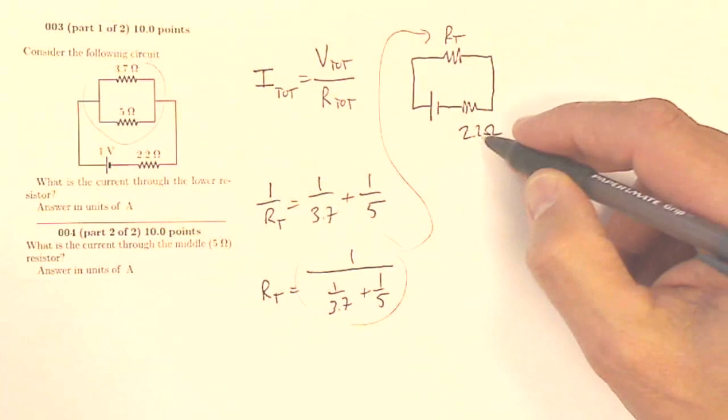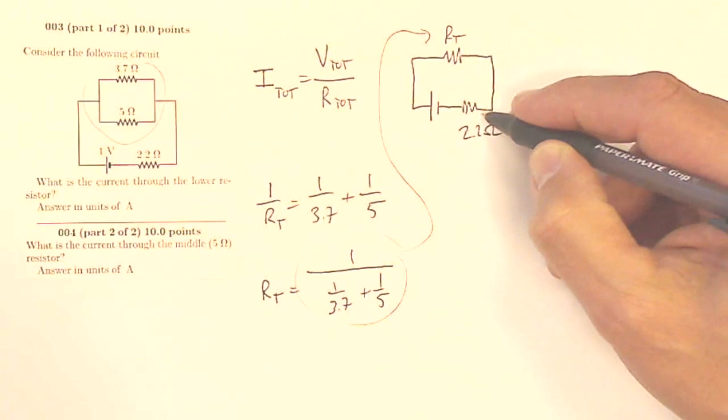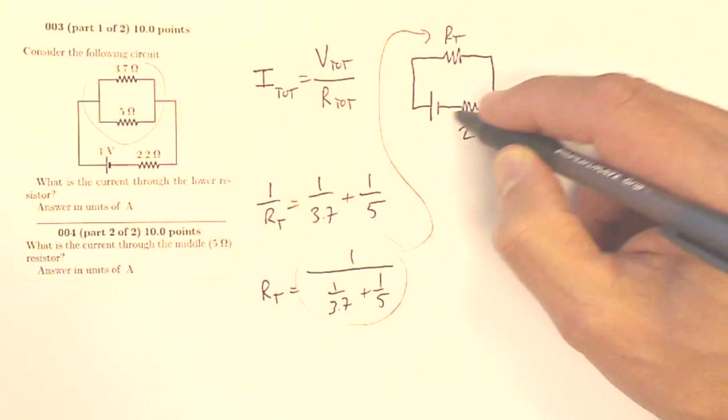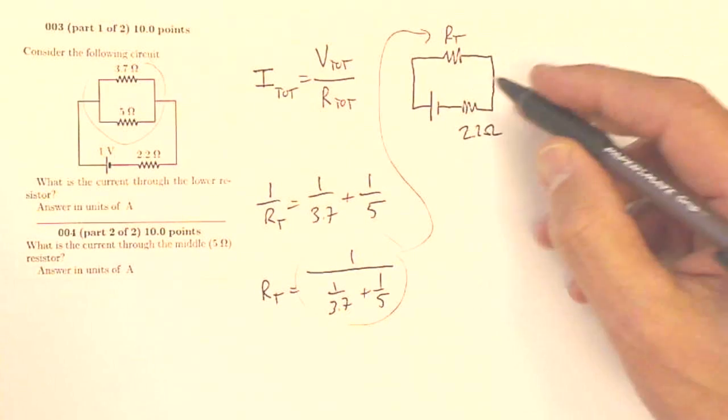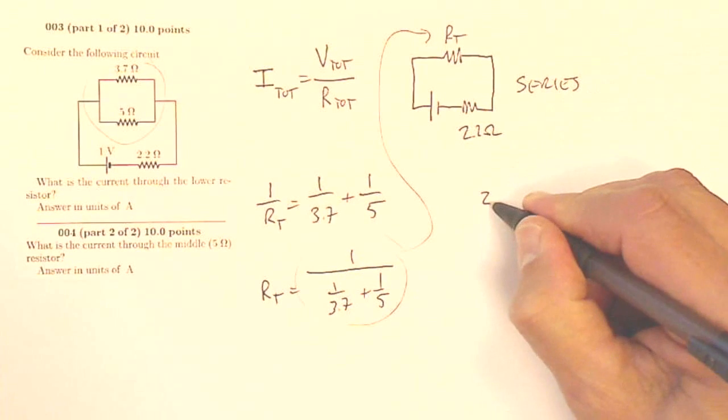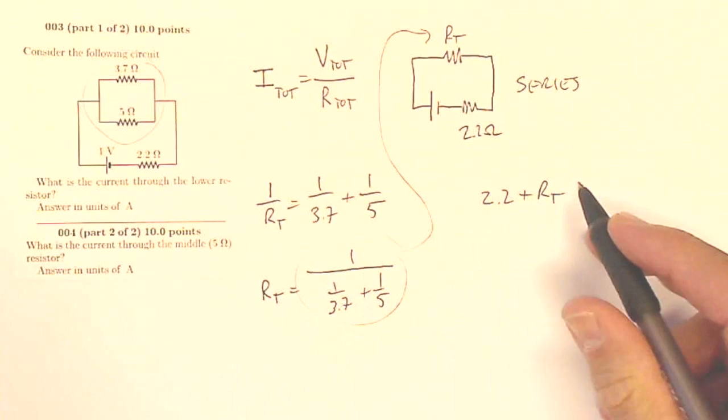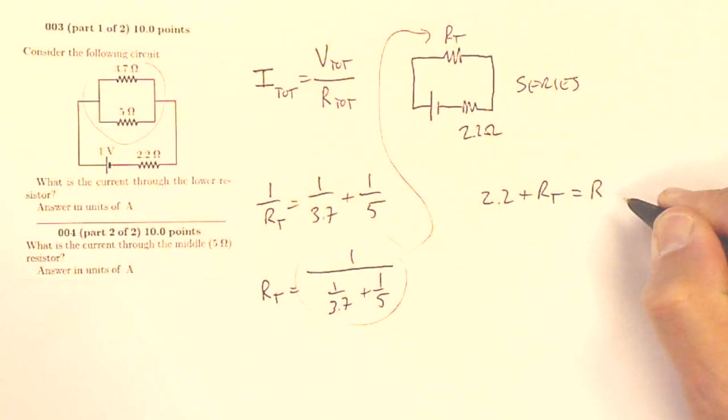Now, how do I get the total of these two? These are in series because it goes through this resistor and it goes through this resistor without a choice. All current goes through both of them. So I know that these are series. So if these are series, I simply add them up. So I'm going to have 2.2 plus the total resistance of these two is going to equal my equivalent resistance of the circuit.